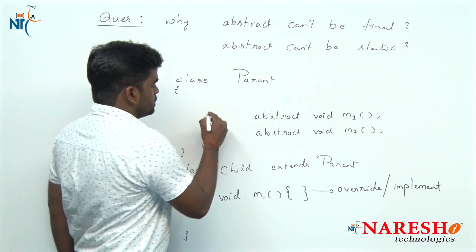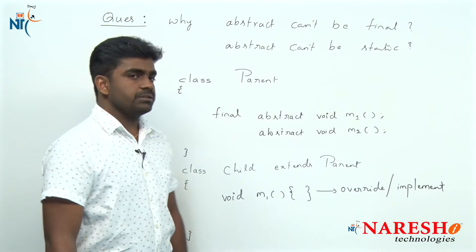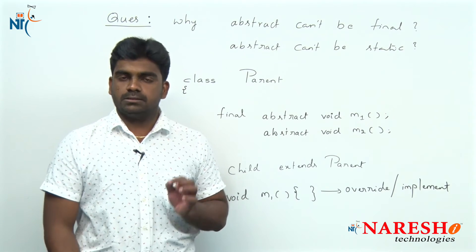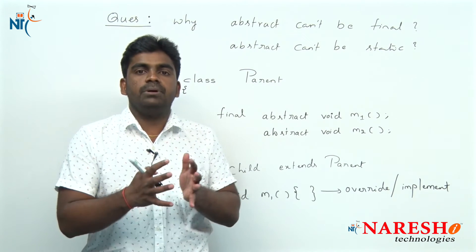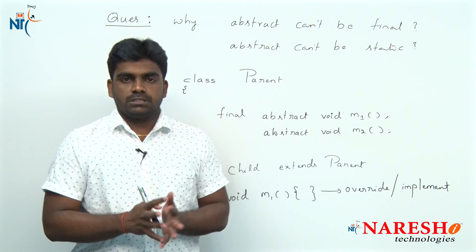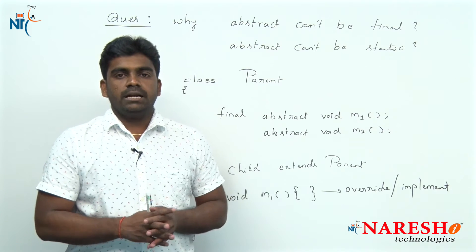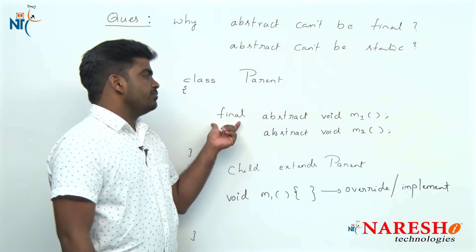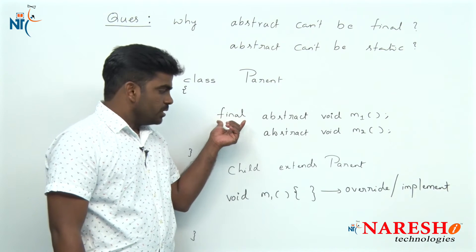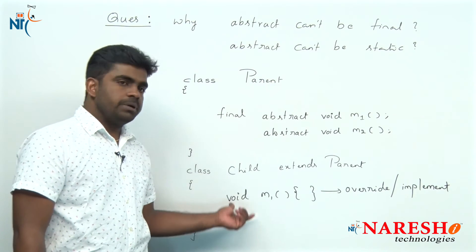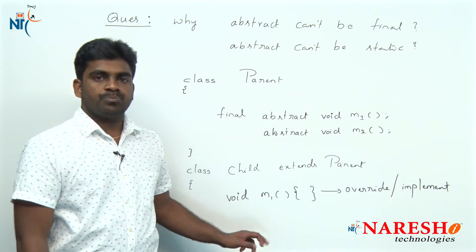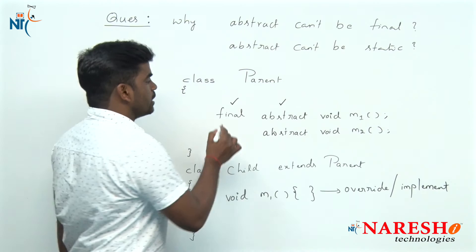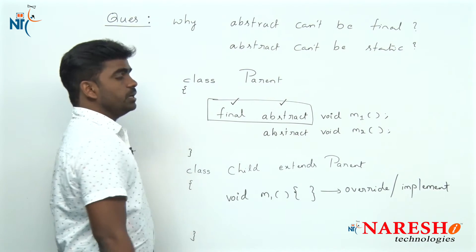But whenever we declare a method as final, what does final mean? Final restricts updation permissions — it is a fixed object. You can access its functionality, but you cannot update it. So whenever you declare a method as final, how can you override it? Overriding means updating the functionality. That is impossible. That is why final and abstract is an illegal combination of modifiers.